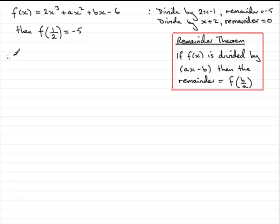What we've got then is 2 times a half cubed plus a times a half squared plus b times a half minus the 6 equals the remainder minus 5. If you work this out, what you'll find is you get a quarter for this term, a quarter a here, and then a half b, so plus a half b and then minus 6 equals minus 5.